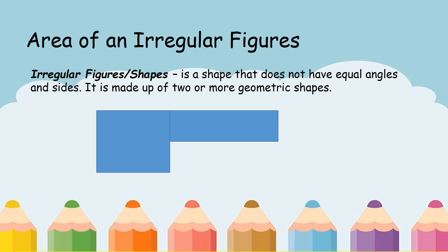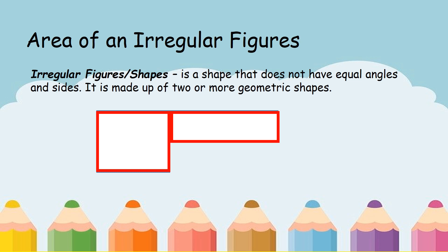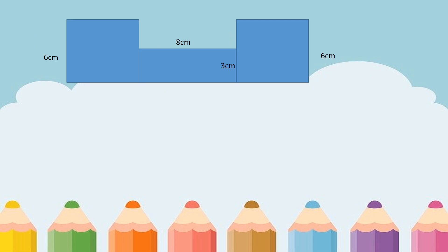This figure is an example of an irregular figure, or simply stated, irregular figures are made up of squares and rectangles. This is also an example of an irregular figure because it is made up of squares and a rectangle.